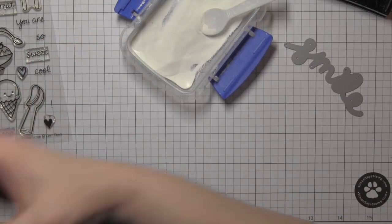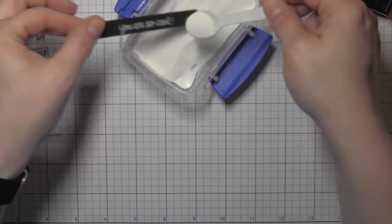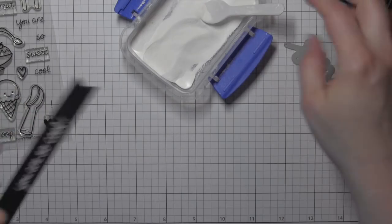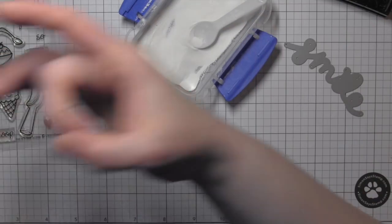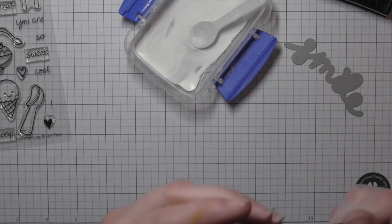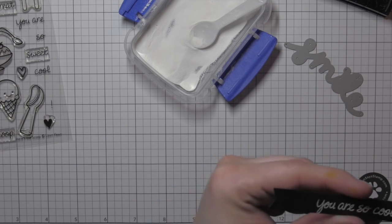And then I'm going to go ahead and heat emboss that with my heat tool. So I'm just making sure that it's cleaned off, that there's no little specks of white embossing powder anywhere but right on the actual stamped greeting.